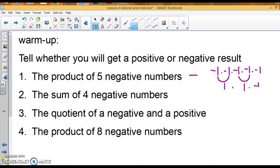Whenever you have an odd number of negatives and you're multiplying, or dividing for that matter, you're going to end up with a negative. The sum of four negatives. Now think about this, sum means add. So if you add four negatives: negative one plus negative one plus negative one plus negative one. Aren't I going to get negative four? It's going to be a negative number because when you add numbers of the same sign, you add and keep the sign.